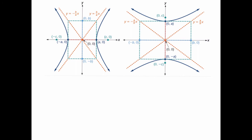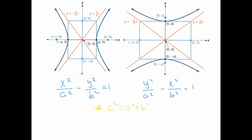In summary, any hyperbola centered at the origin takes one of two standard forms. Knowing a and b is sufficient to find everything. The value c is not part of the hyperbola itself, but the Pythagorean identity c² = a² + b² lets you recover a and b from information about the foci. The rectangle has width 2b and length 2a, and the lines through its diagonals are the asymptotes — useful for sketching.